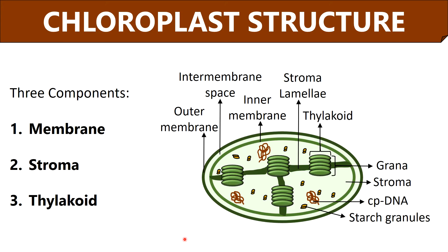Now let us discuss the detailed structure of the chloroplast. The three major components are the membrane, stroma, and thylakoid. Starting with the chloroplast membrane, there is a smooth outer membrane and a selectively permeable inner membrane, within which an intermembrane space is found. Stroma is the colorless alkaline or aqueous fluid comprising chloroplast DNA, lipids, and some starch granules, and it encloses internal membrane structures like thylakoids and lamellae.